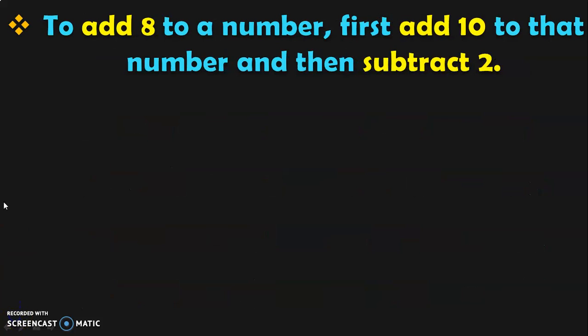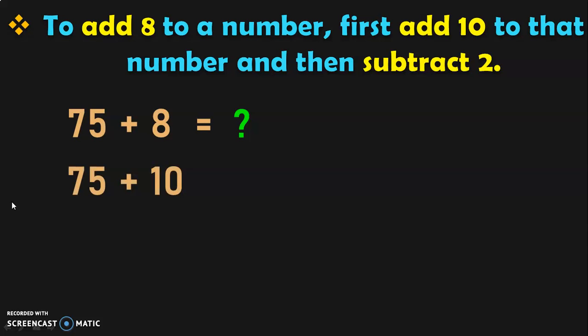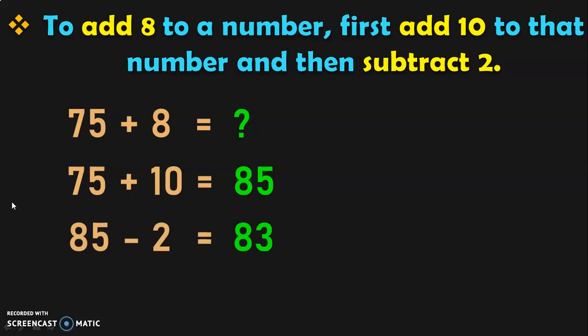Next, let us see how to add 8 to a number. To add 8 to a number, first add 10 to that number and then subtract 2. Let us see this with examples. 75 plus 8: first add 75 plus 10, which gives you 85. Now subtract 2 from 85, which gives you 83. So, the sum of 75 plus 8 is equal to 83.